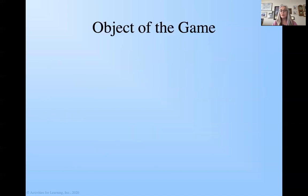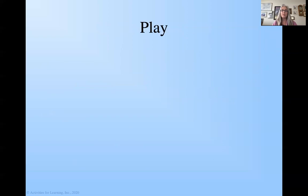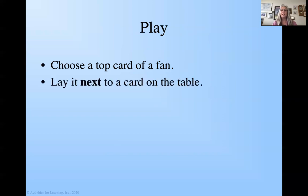Our object of the game is to build the table by playing all the cards that are in my fan. We're going to choose a top card of a fan. So if there's a card underneath, you won't be able to access that until you lift that top card off. And you can only lay it next to a card on the table. So everything's going to kind of build. Let's go ahead and watch how we play this.